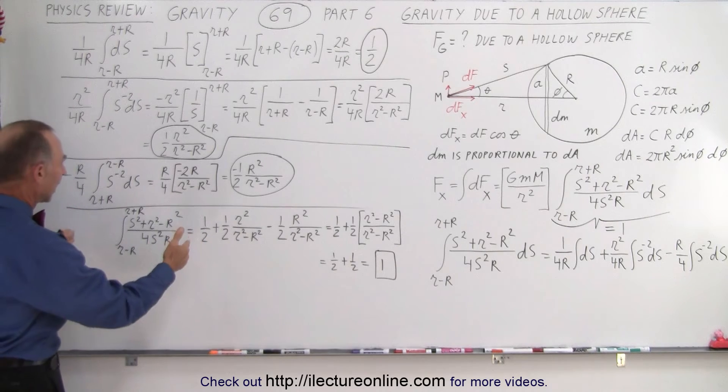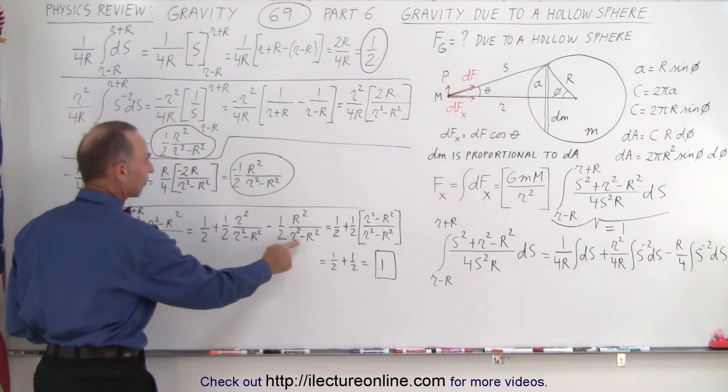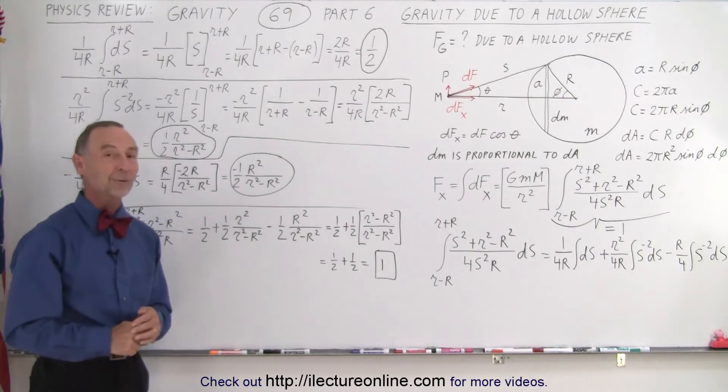But when we then go ahead and add them all together, we end up with 1 half plus 1 half times this, minus 1 half times this. When we algebraically simplify that, it does indeed come out to be equal to 1.